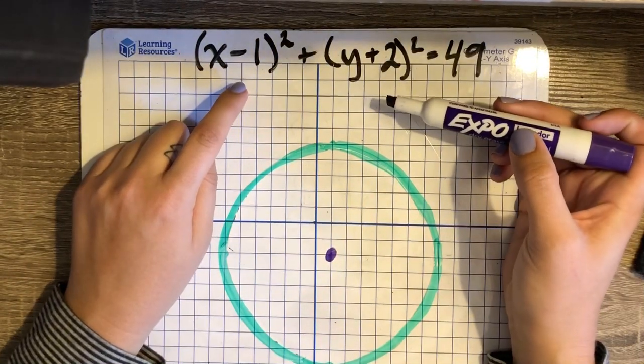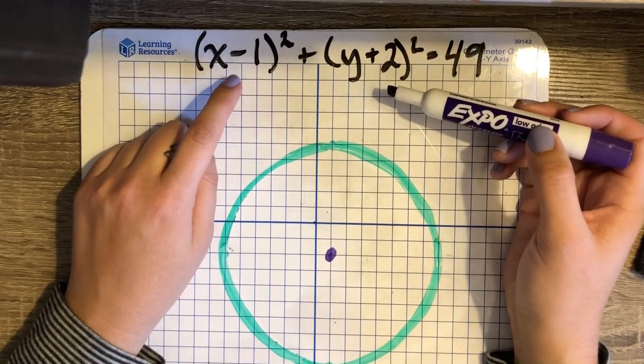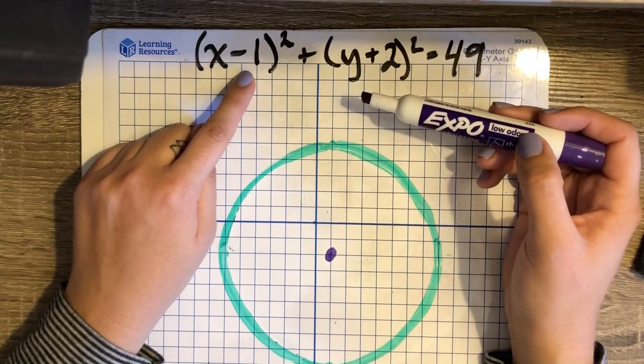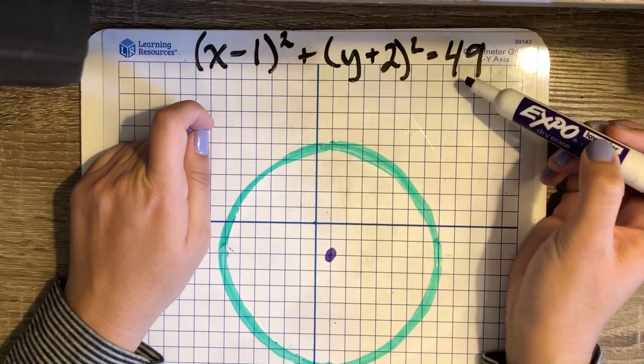So the equation of a circle that is not centered at the origin has to adjust a little bit. It's no longer x squared plus y squared. Instead, it will be x minus h squared plus y minus k squared, still equal to r squared.